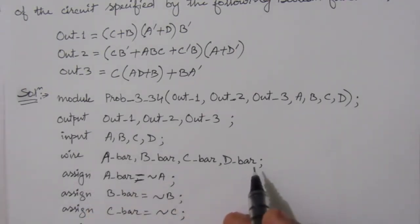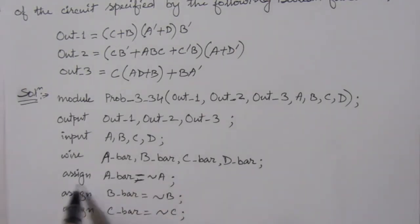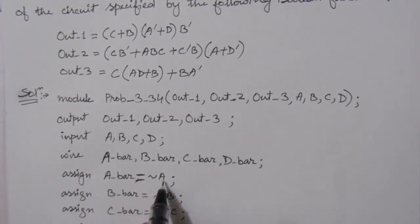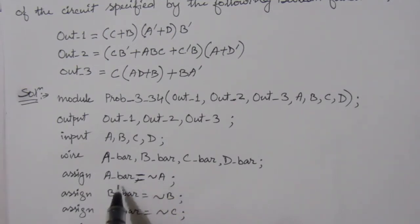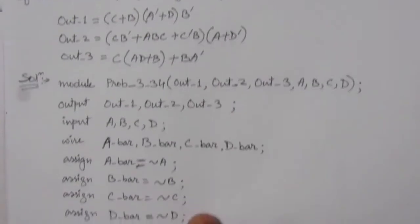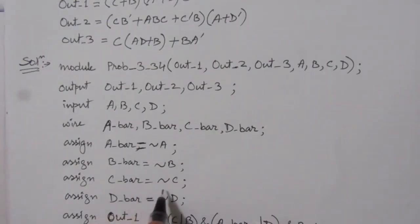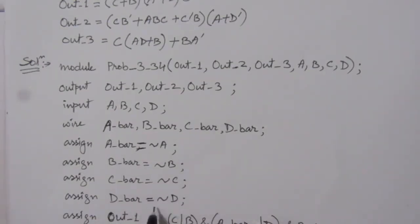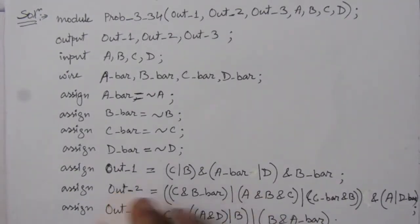We will write: assign A_bar = ~A. That means the complemented or inverted A will be stored in A_bar. Similarly, inverted B will be stored in B_bar, C_bar will contain the C complement, and D_bar will contain the D complement.